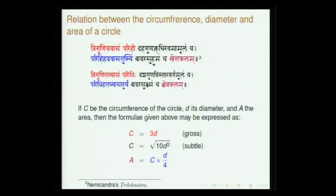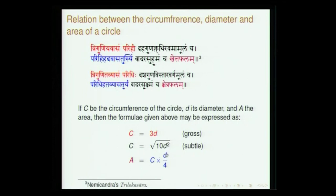Paridhi vyasa thuryam: thuryam is one-fourth — turya being the fourth state in philosophical literature, here used as one-fourth. Paridhi hatha vyasa thuryam — one-fourth of circumference times diameter gives the khetta phalam — kshetra phalam. Badara sukshmam — sukshmam is perhaps the more accurate. Some of these verses have been cited by Bhaskara in his commentary to Aryabhatiya. Most earlier Jaina works are in a language not far from Sanskrit but requiring a certain familiarity.